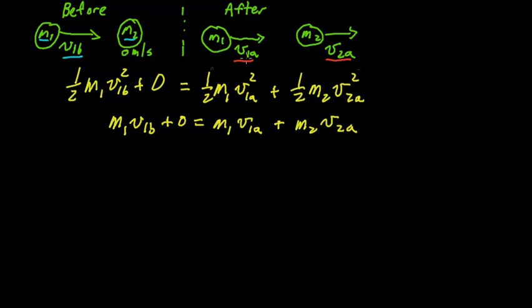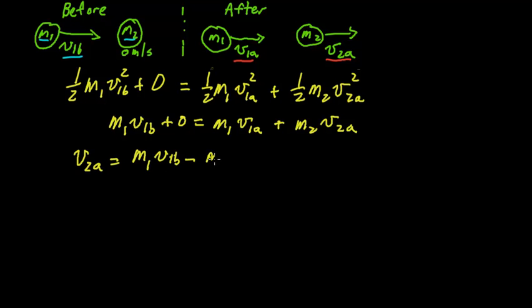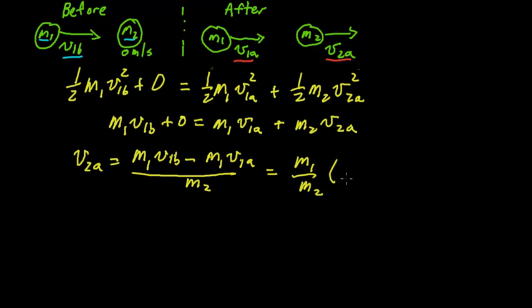I'm looking for equations to get V1_afterward and V2_afterward in terms of all the others. I'm going to solve for V2_afterward from the momentum equation and then plug that into the kinetic energy equation to solve for V1. So V2_afterward equals M1V1_before minus M1V1_afterward all over M2, which simplifies to M1 over M2 times (V1_before minus V1_afterward).